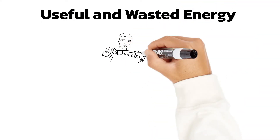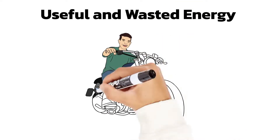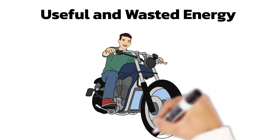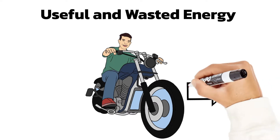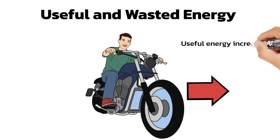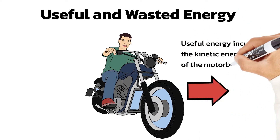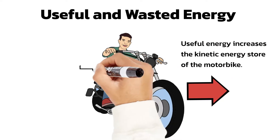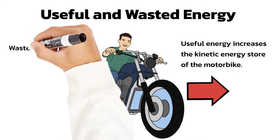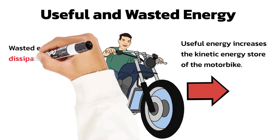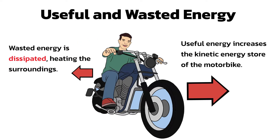When John rides his motorbike, its engine transfers energy from the chemical energy store of the fuel to the bike's kinetic energy store. This causes the motorbike to speed up, so it is the useful energy pathway. Some energy is wasted as sound and heat from friction in the engine, which dissipates, or spreads out, to the surroundings.